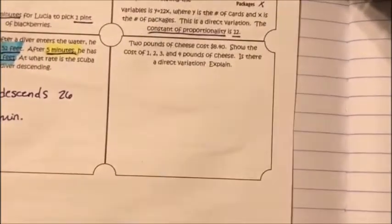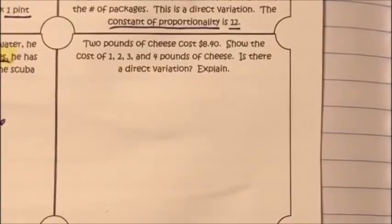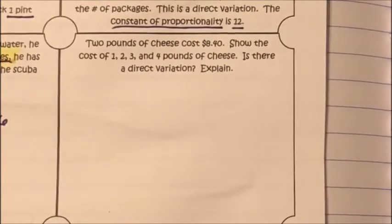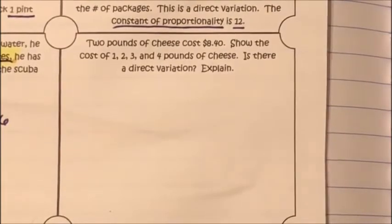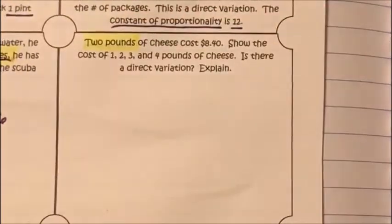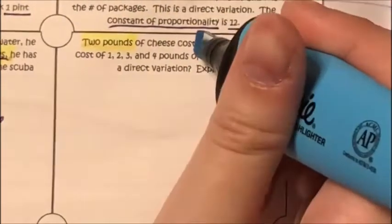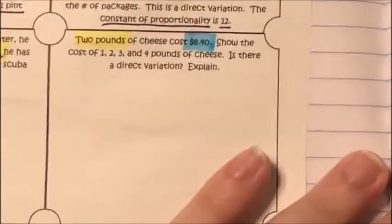Let's look at the second try-it problem. It says: 2 pounds of cheese cost $8.40. Find the cost of 1, 2, 3, and 4 pounds of cheese. Is there a direct variation? Explain. The important information: 2 pounds of cheese costs $8.40.